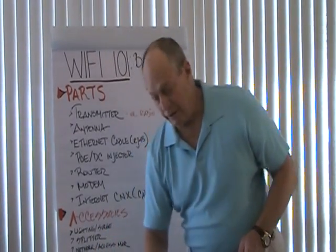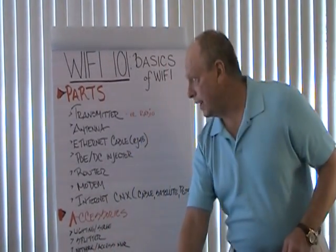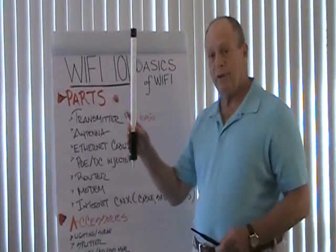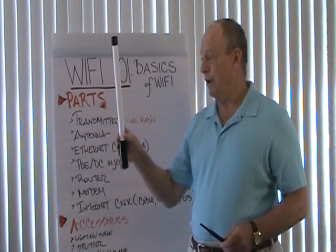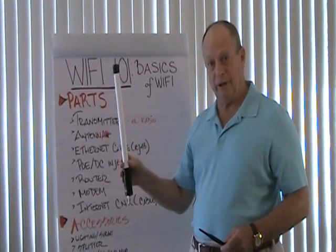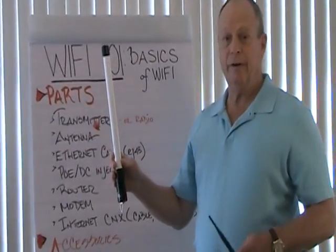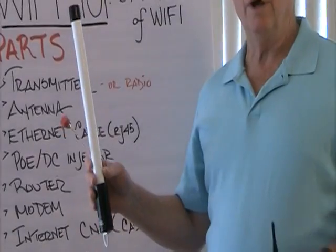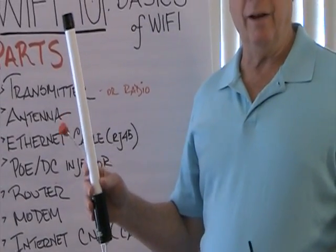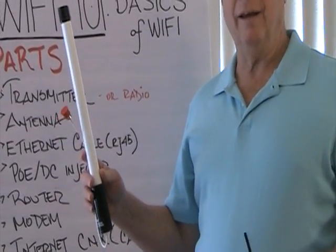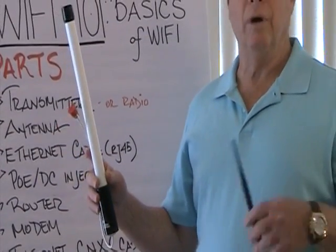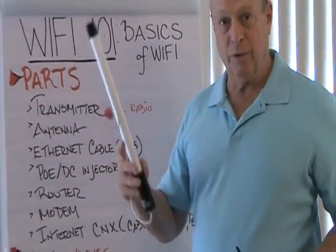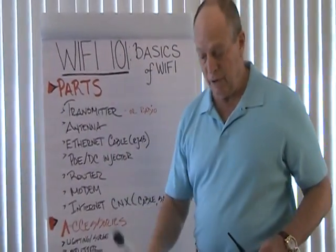The next item on the list is an antenna. It looks something like this, which is an omnidirectional antenna. There are other types: sector antennas, panel antennas, Yagi antennas, and we'll go into those later on in the class. We just want you to know what they look like.